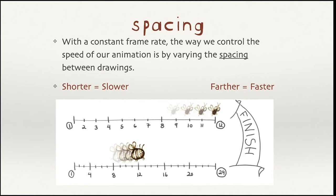If you look at this little illustration, each mark on this line represents one drawing — a separate piece of paper or a separate frame — as two bugs race towards the finish line. The bug on top, the little fly, has spacing quite a bit farther apart than the spacing of the little bee on the bottom. Farther means faster, so the fly on top is going much faster — in fact, twice as fast as the little bee. The shorter spacing down there means the bee is going slower.